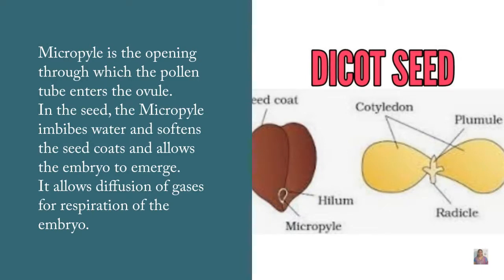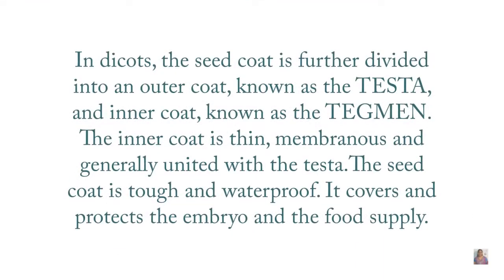The micropyle also allows diffusion of gases for respiration of the embryo. In dicots, the seed coat is further divided into two parts: the outer coat, called the testa, and the inner coat, called the tegmen. The inner coat is usually thin and membranous and generally united with the testa. The seed coat is tough and waterproof, covers and protects the embryo, and is responsible for the food supply.